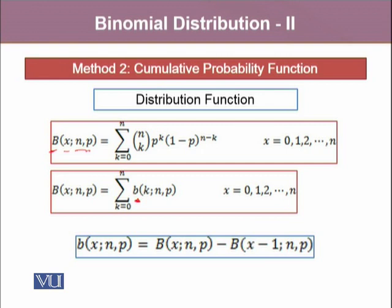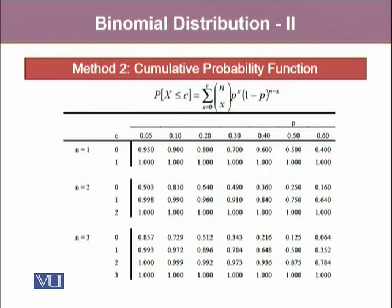What the cumulative probability distribution function does is that it accumulates all the probabilities from the point X and previous. So if we have to find out the probability of X equals 2, then we will subtract the cumulative probability of X equals 2 from the cumulative probability of X equals 1. And it goes on. So let's try to do it using a table.